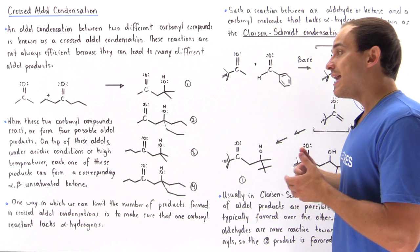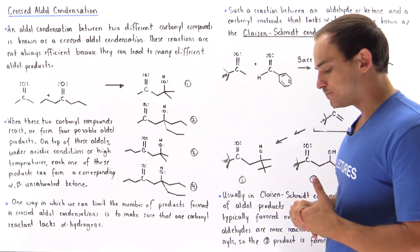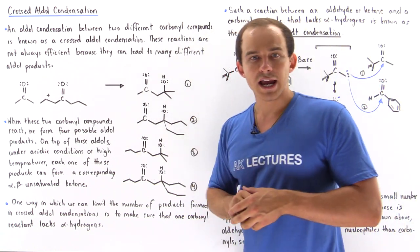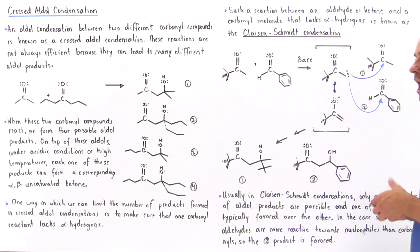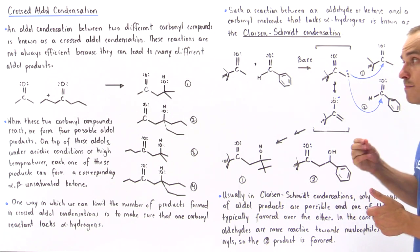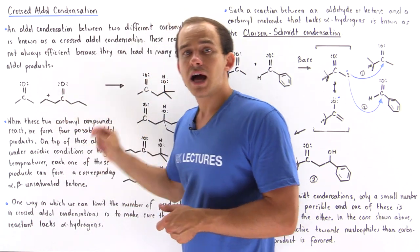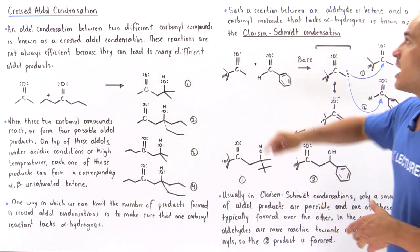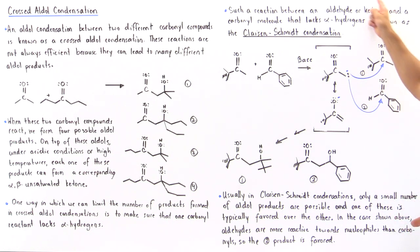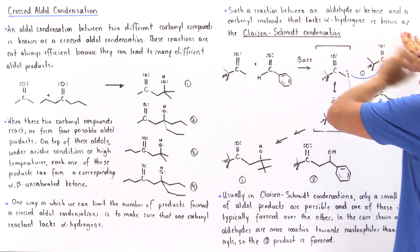This type of reaction isn't very efficient in producing a specific type of aldol product. One way in which we can limit the number of products formed in the crossed aldol condensation reaction is to make sure that one of the carbonyl compounds does not have any alpha hydrogen atoms. Such a reaction between an aldehyde or a ketone and a carbonyl molecule that does not have any alpha hydrogens is known as a Claisen-Schmidt condensation.